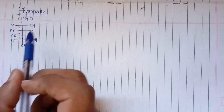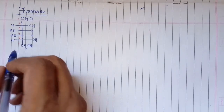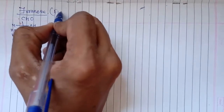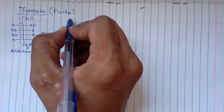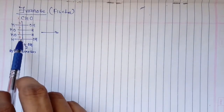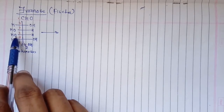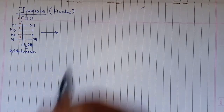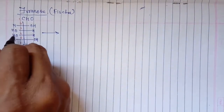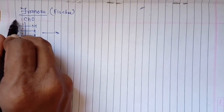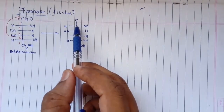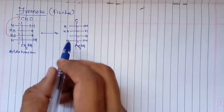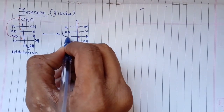Now let me show how to write the furanose form of this aldo hexose using the Fischer formula. In the furanose form, carbon number one will form a bond with the OH group of carbon number four, giving a five-membered ring. So carbon number four's OH group is attacking carbon number one. I have drawn carbons two, three, four, five, and six — and you can see that carbon number four is going to attack carbon number one.